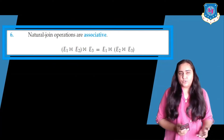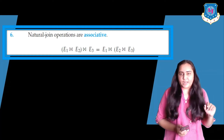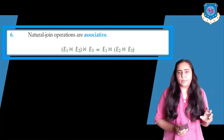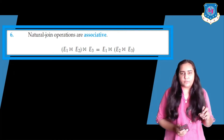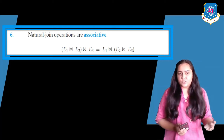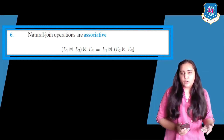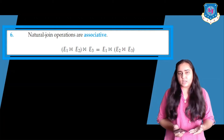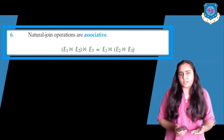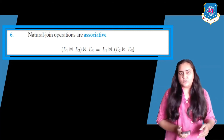The sixth rule says that natural join operations are associative. Associativity deals with the placement of brackets — it tells you which operation is performed first based on the braces around them. On the left-hand side, we take the natural join of E1 and E2, then take a natural join of that result with E3. On the right-hand side, we first perform a natural join between E2 and E3 and then join that result with E1 — and that's why natural joins are associative.